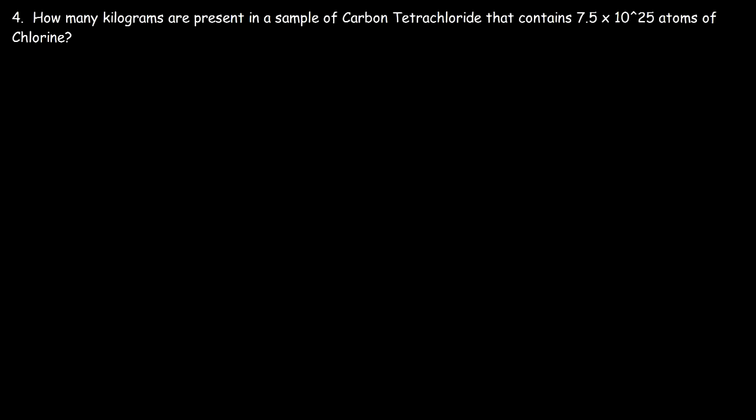Number 4: how many kilograms are present in a sample of carbon tetrachloride that contains 7.5 times 10 to the 25 atoms of chlorine? We're given atoms of chlorine. Our goal is to convert from atoms of chlorine to kilograms of the sample carbon tetrachloride. The chemical formula of carbon tetrachloride is CCl4 — tetra is 4. We need to go from atoms to moles, moles to grams, grams to kilograms, and also change the substance from chlorine to CCl4.